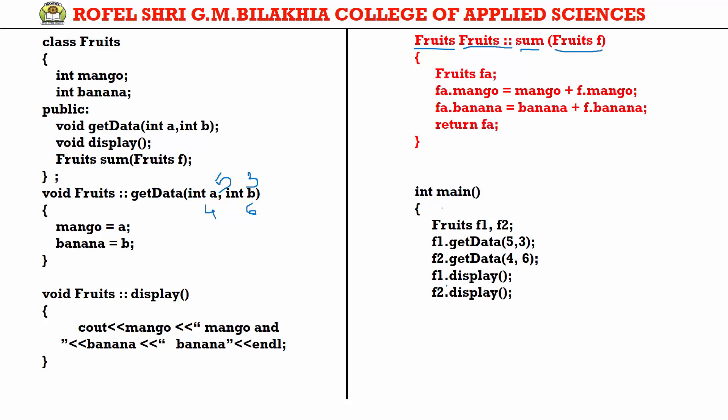We call display — F1.display will show 5 mango and 3 banana, and F2.display will show 4 mango and 6 banana. Now we want the addition of the two objects: 5 plus 4 equals 9 mango, and 3 plus 6 equals 9 banana. However, we cannot directly write F1 plus F2 for two objects, because they contain different variables — mango and banana — making direct addition not possible.